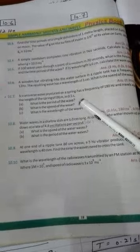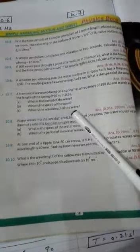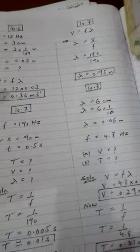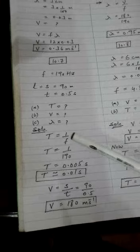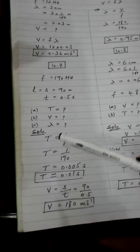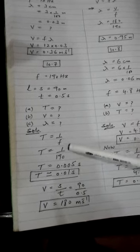Time is 0.5 seconds. What is the period? Period means time period, capital T. Speed V? And wavelength lambda? So problem 10.7, this is the data, this is required. Solution: apply the general formula, time period equals 1 over F. Substitute the value of F, you will get the value of time period.